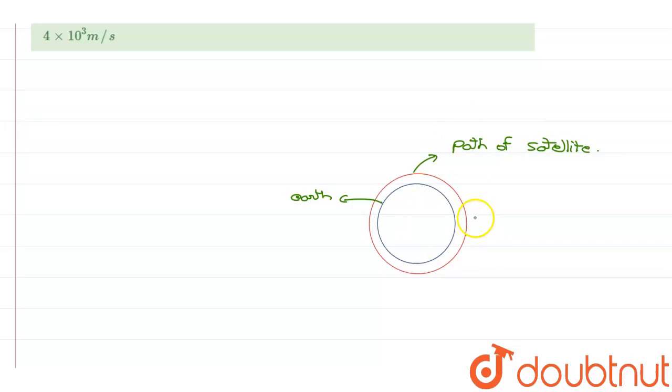Now if this is the path of satellite and let's say we fired it with some velocity v, then the force that is pulling the satellite towards the earth is F equals GM upon R plus h squared, where R is the radius of earth and h is the height above the earth's surface.